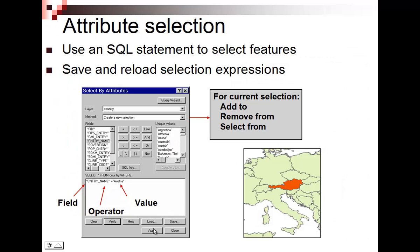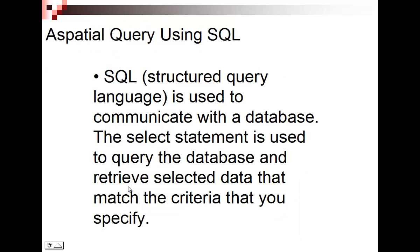In ArcGIS, we have an SQL statement generator. I have a statement generator where I can click on the fields, the operator, and the unique values, and we generate something called an SQL statement — Structured Query Language statement — that gives me the field, some operator, and a value to compare it to. SQL is the language by which we communicate with a database. Some people are straight-up SQL programmers, but we're able to do it not programmatically — just by clicking on the fields, the operators, and putting in a value.